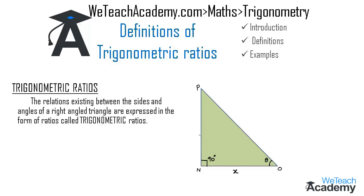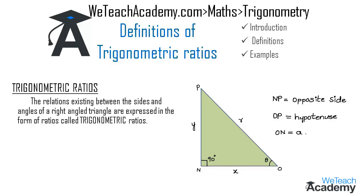NP is equal to y, and OP is equal to r. The side opposite to angle theta, that is NP, is called the opposite side. OP is the largest side, called the hypotenuse. The side adjacent to angle theta, ON, is called the adjacent side. The relations between all these sides and the angle are expressed as ratios.